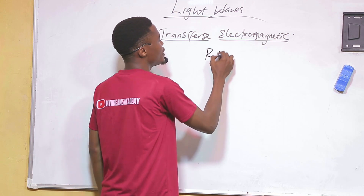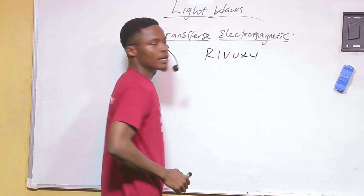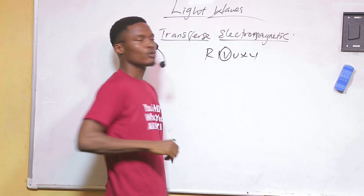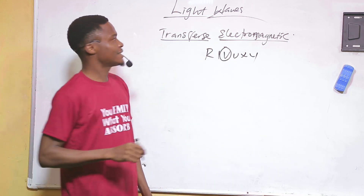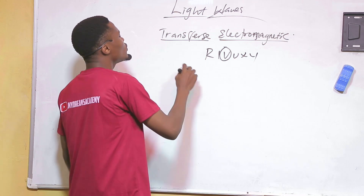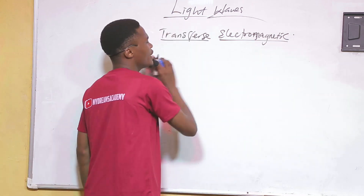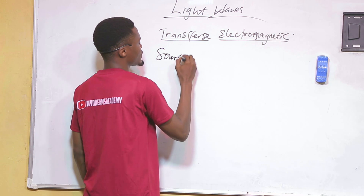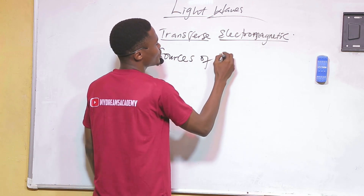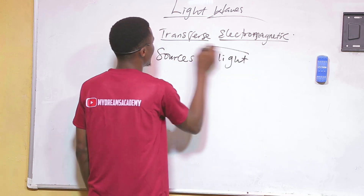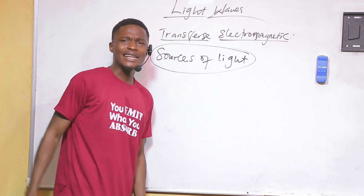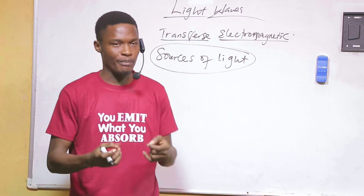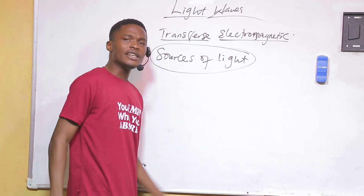In our previous video we talked about other parts of the electromagnetic spectrum. Today we are talking about visible light. When we talk about light waves, we need to talk about the sources of light — where can we get light waves from?